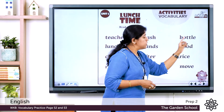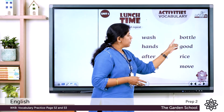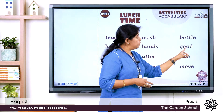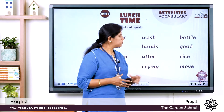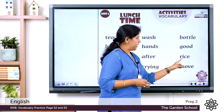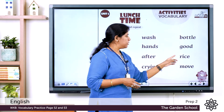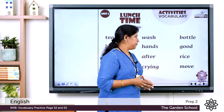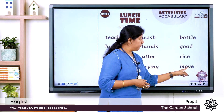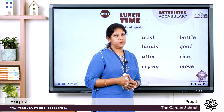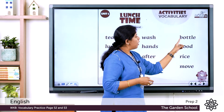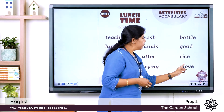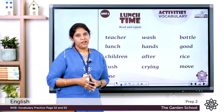Bought. Bottle. How do we say? Bottle. G — go. Good. R — rise. It is a sound. Rise. I am going to write. Rise. Move. Move. We will read this: bottle, good, rice, move.